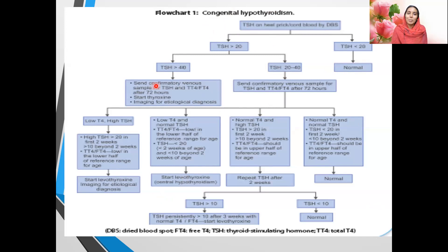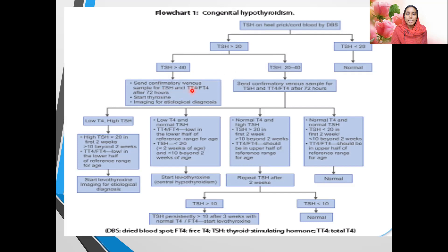Regarding the screening flowchart: TSH on heel prick or cord blood by DBS — if less than 20 it is normal; if more than 20, proceed further. If more than 40, send blood for confirmatory sample for TSH and FT4 after 72 hours, start L-thyroxine, and do imaging for etiological diagnosis. If TSH is in the range of 20 to 40, send a confirmatory venous sample for TSH and FT4 after 72 hours.